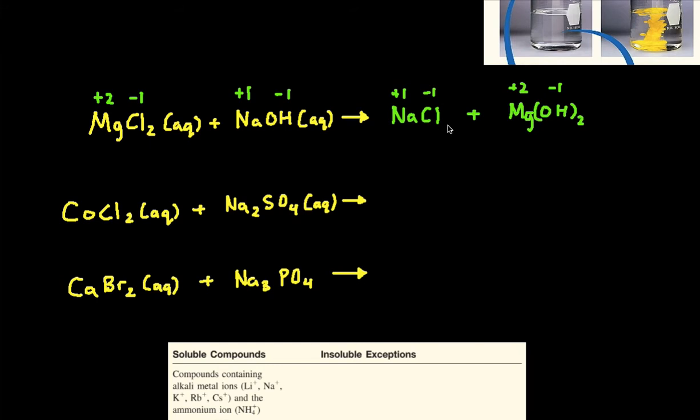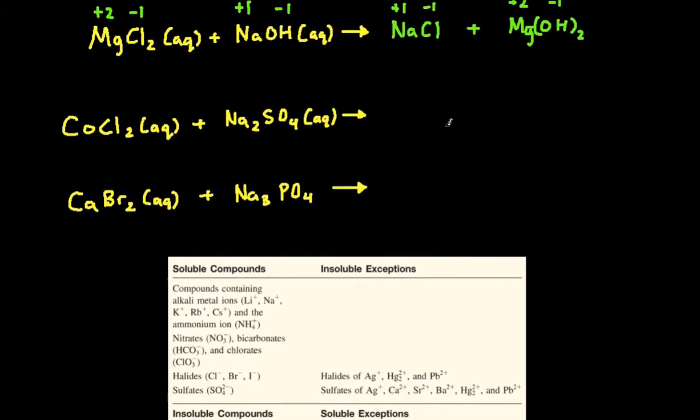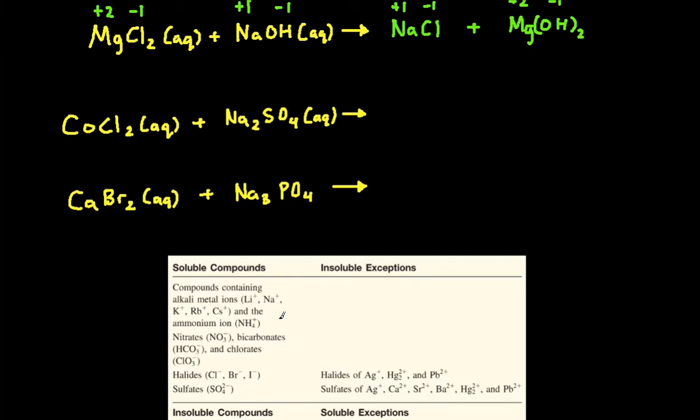Then, next, we need to predict the physical states of the two products. And that's why we have to use the solubility rules. And I included a table down here for us to quickly reference it. So first of all, we're looking at sodium chloride. And you can see that any compound containing an alkali metal is going to be soluble. So that's going to be aqueous.